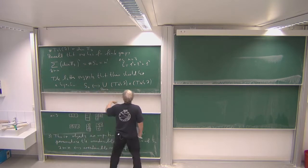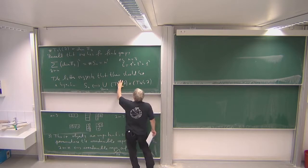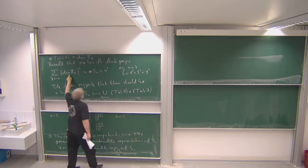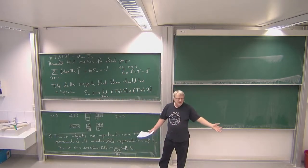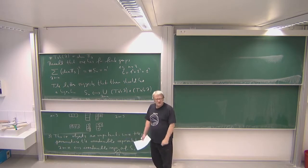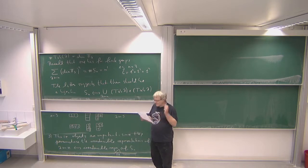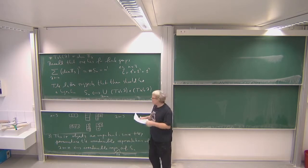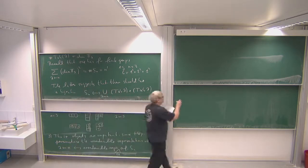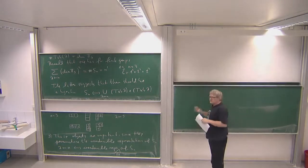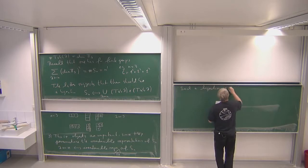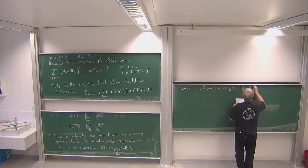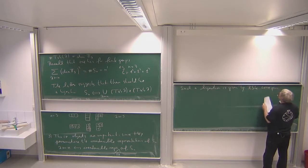Of course the question is whether there is a nice bijection that preserves more structure than just cardinality. The RSK bijection does exactly this — it is a concrete bijection between S_n and the set of pairs of same-shape Young tableaux, and it also has additional nice features. I'm not going to give a formal definition, but I want to do one example.